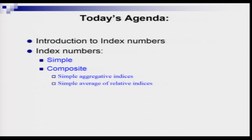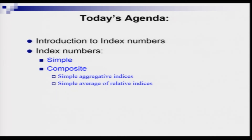Let us have a look at today's agenda items. We will start with a brief introduction to index numbers, which are very useful when you have time series data. Then we are going to talk about the types of index numbers — broadly speaking they are of two types: simple and composite. In this lecture we are going to cover two of them: simple aggregative indices and simple average of relative indices.